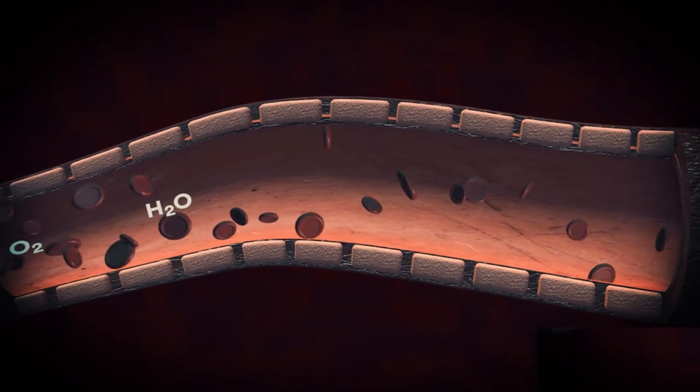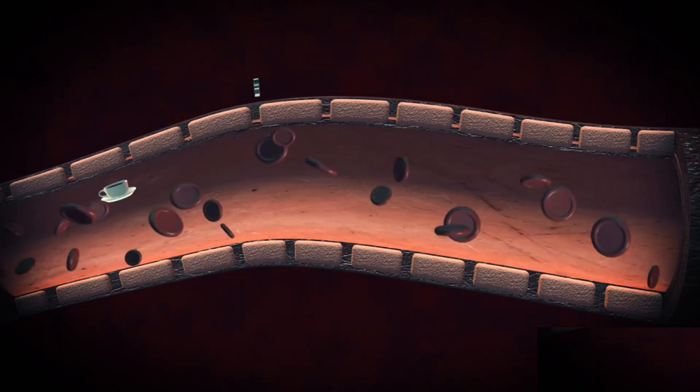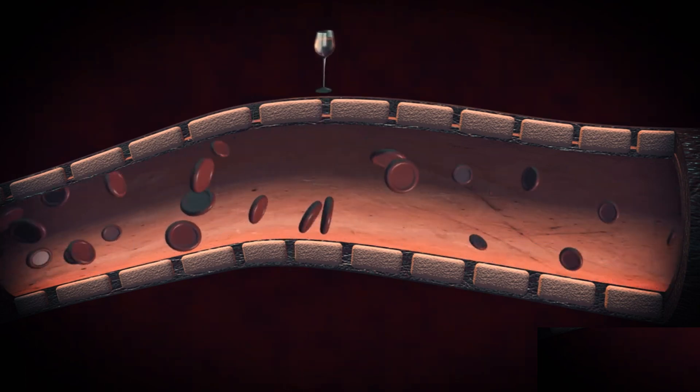The blood-brain barrier consists of tightly packed cells that selectively control the substances allowed into our brain tissue, safeguarding it from potentially harmful agents.